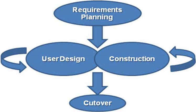Rapid Application Development is a software development methodology which favors iterative development and the rapid construction of prototypes instead of large amounts of up-front planning. The planning of software developed using RAD is interleaved with writing the software itself. The lack of extensive pre-planning generally allows software to be written much faster, and makes it easier to change requirements. The rapid development process starts with the development of preliminary data models and business process models using structured techniques. In the next stage, requirements are verified using prototyping, eventually to refine the data and process models. These stages are repeated iteratively.